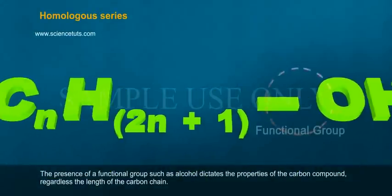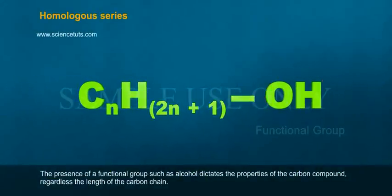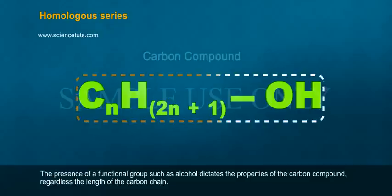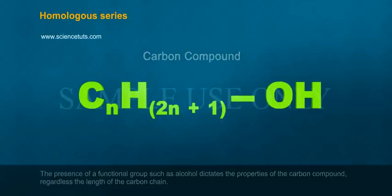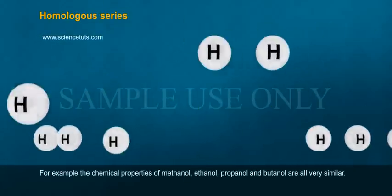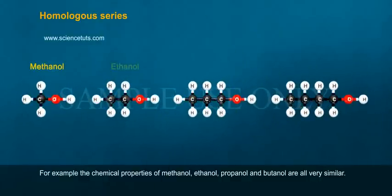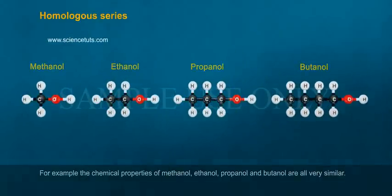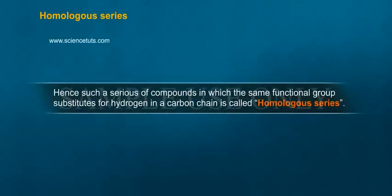A homologous series is defined by the presence of a functional group, such as alcohol, which dictates the properties of the carbon compound regardless of the length of the carbon chain. For example, the chemical properties of methanol, ethanol, propanol, and butanol are all very similar. Such a series of compounds, in which the same functional group substitutes for hydrogen in the carbon chain, is called a homologous series.